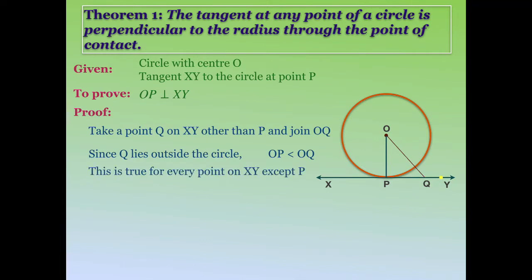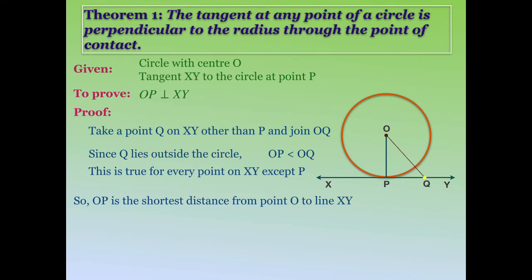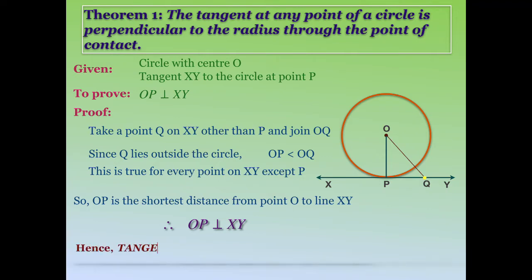This is true for every point on XY except point P, because all other points are in the exterior of the circle, so their distance from the center will always be greater than the radius. That means OP is the shortest distance from point O to line XY. Since the shortest distance between a point and a line is always the perpendicular distance, hence radius OP is perpendicular to tangent XY at the point of contact.